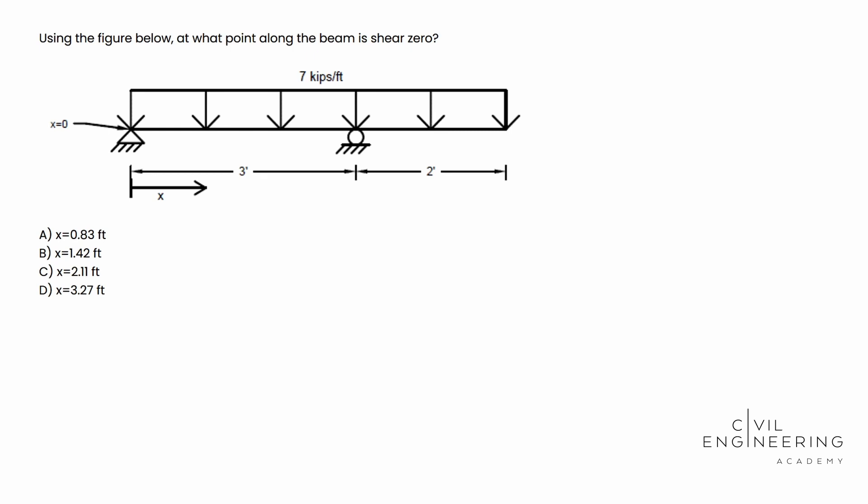Alright, so today we have a structural mechanics problem. We're going to be talking a little bit about shear. Here's what the question says: Using the figure below, at what point along the beam is shear zero? We see that x equals zero at our pin support and then we have this distributed load seven kips per foot all the way to the end. It looks like that's five feet and we have a roller at the three foot mark and x starts from the left side and goes to the right.